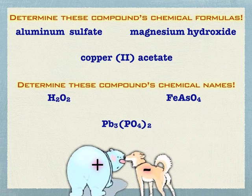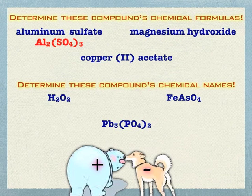Okay, welcome back. Aluminum sulfate: that's Al³⁺ and sulfate SO₄²⁻, so we crisscross those down — we needed three sulfates. It's very straightforward; there's nothing different between that and aluminum oxide, except in this case sulfate is a bigger group of atoms as opposed to just an oxygen, but it's the same sort of idea.